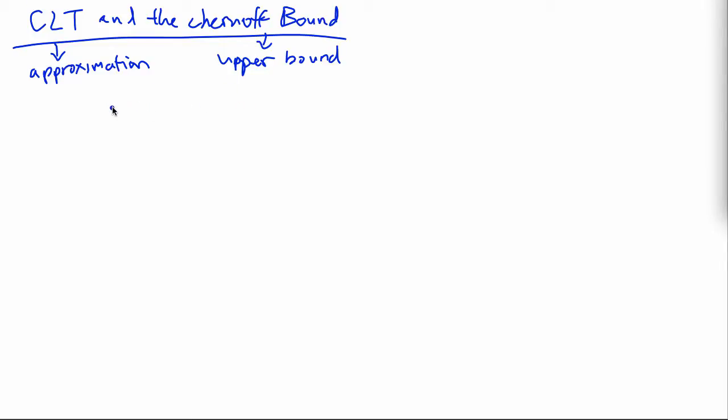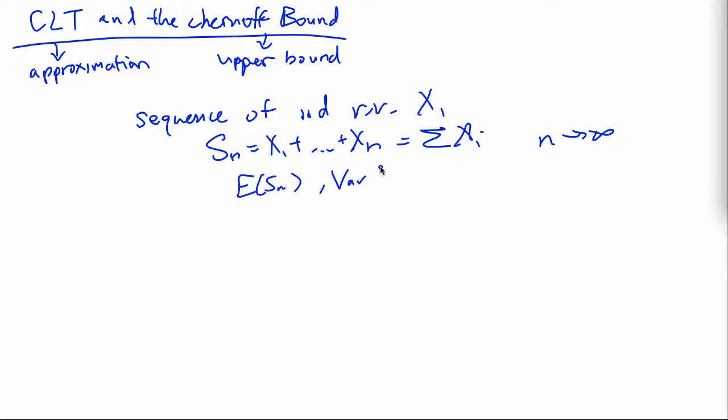So let's start from where we left off in the last video. We were looking at a sequence of iid random variables Xi, and specifically the sum of these random variables and seeing what happens when we make n go to infinity. It turns out that with the sum alone, the mean and the variance won't give us much information because they'll just blow up when we make n go to infinity.